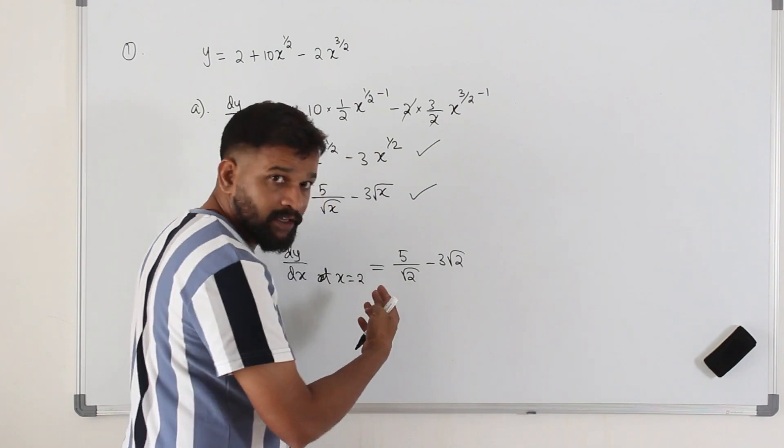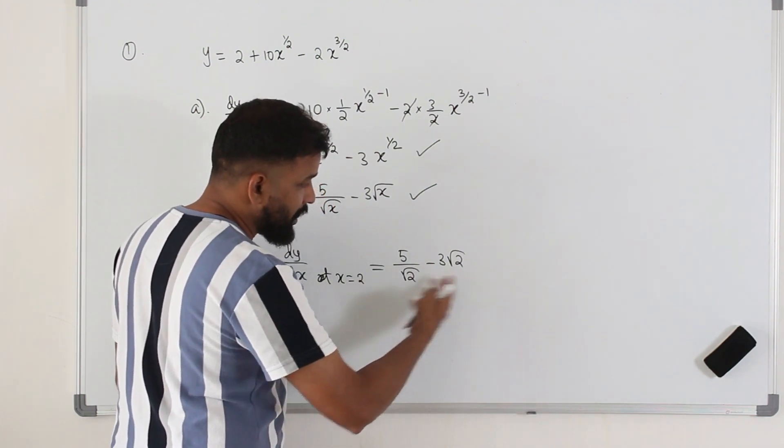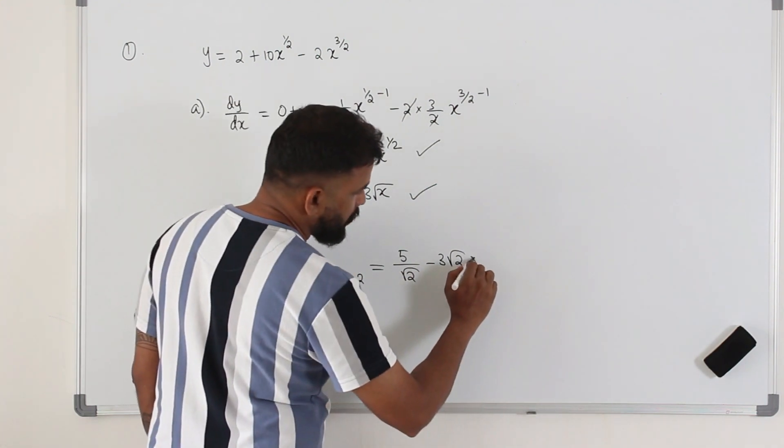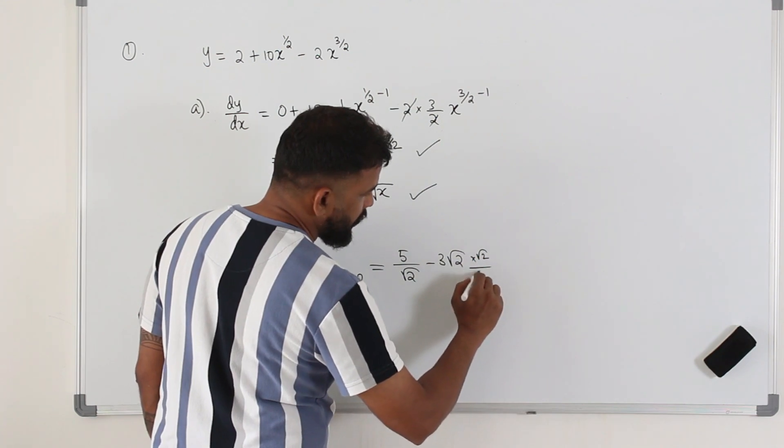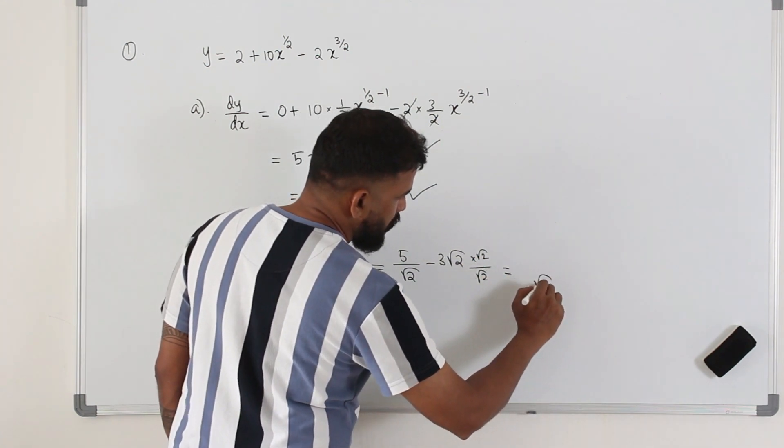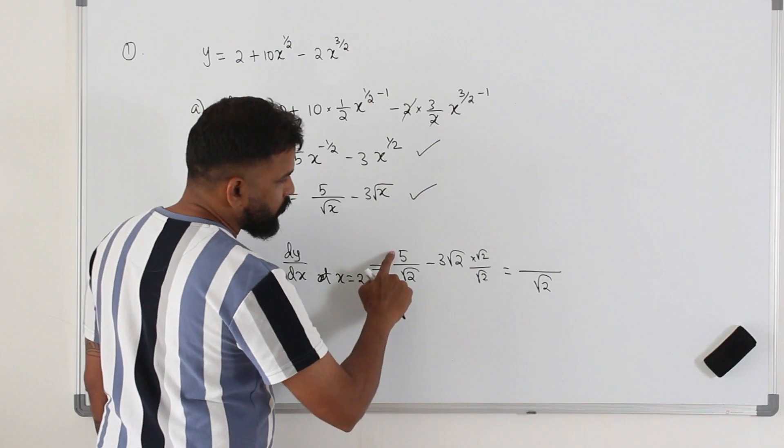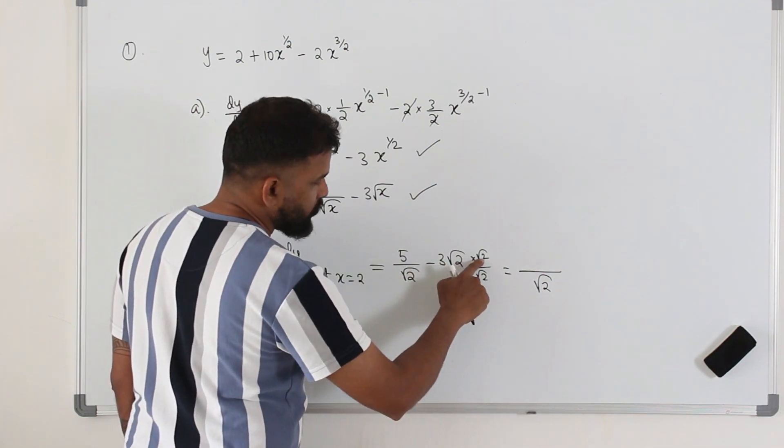So in order to combine this to get a common denominator, I'm going to multiply this and divide by root 2. So we have a common denominator root 2. 5 minus 3 root 2 times root 2 is 6.